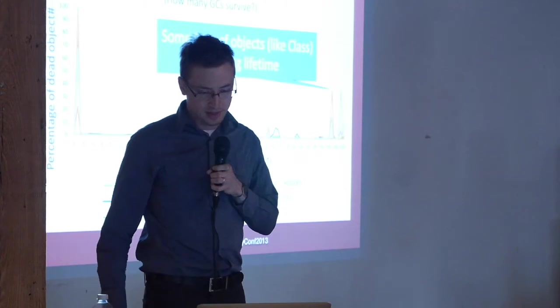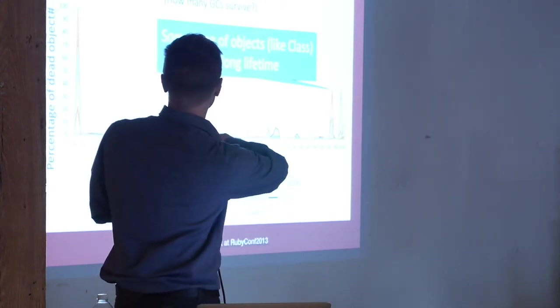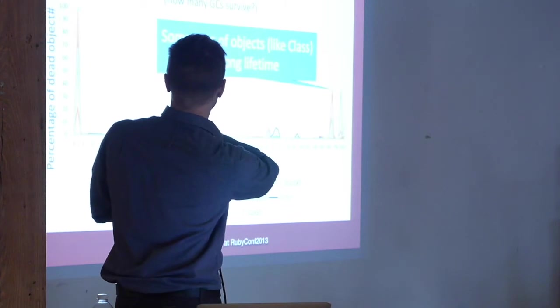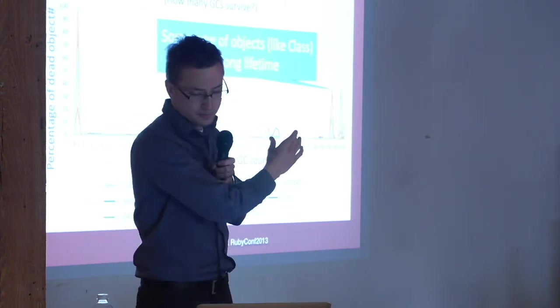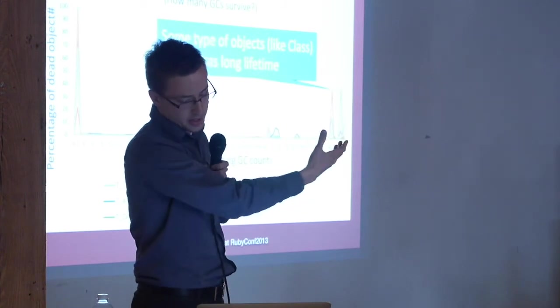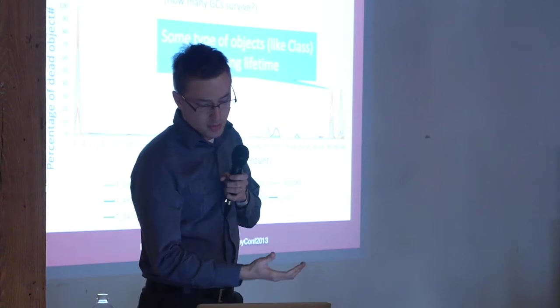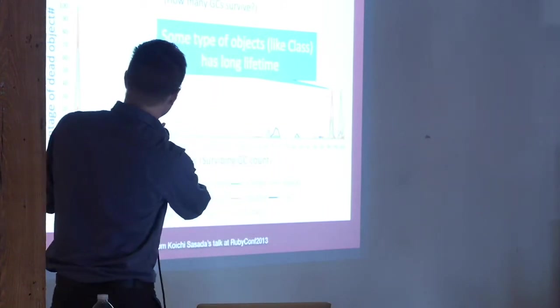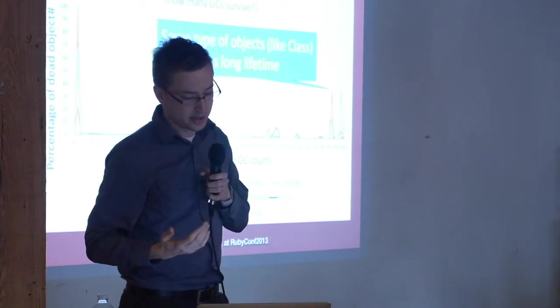Rgen-gc. This is showing the new generational garbage collection, so now you can define, or it basically splits up new, a young generation and old generation of objects, and only performs minor garbage collection on the younger space, and then more major collection on both spaces if you're actually out of memory.